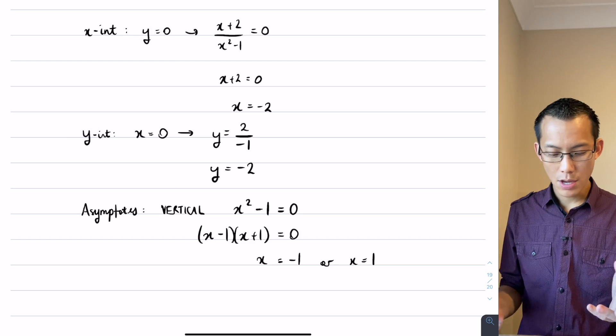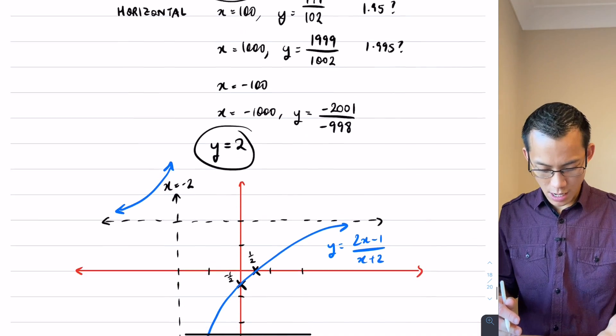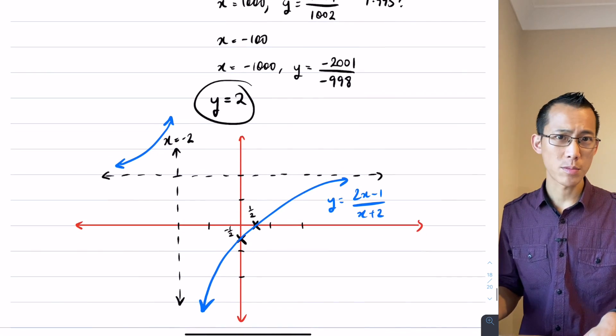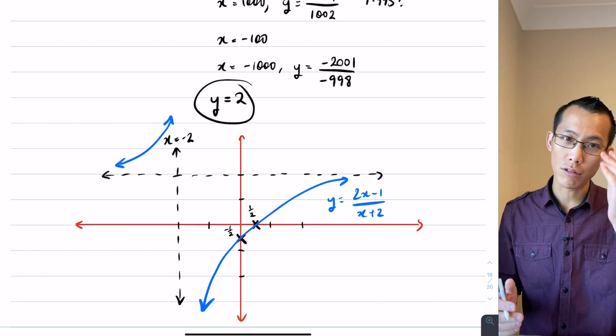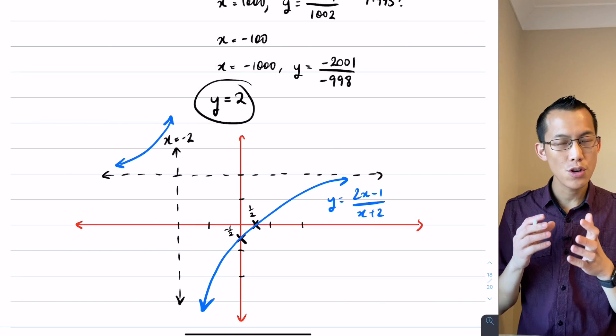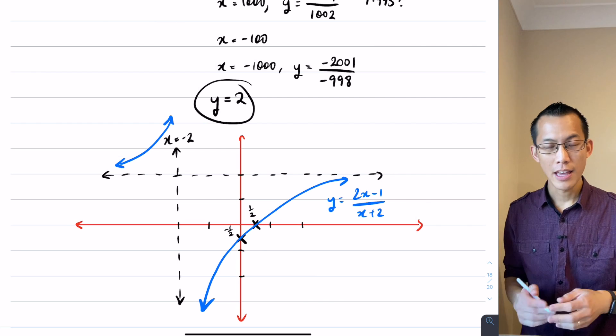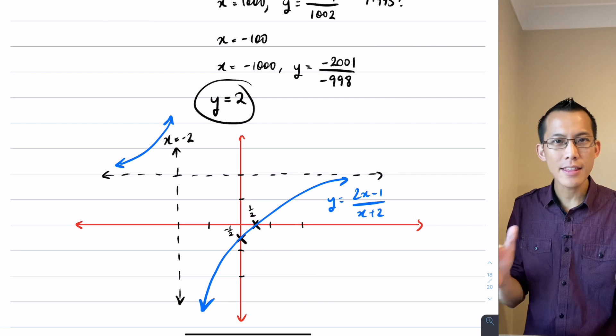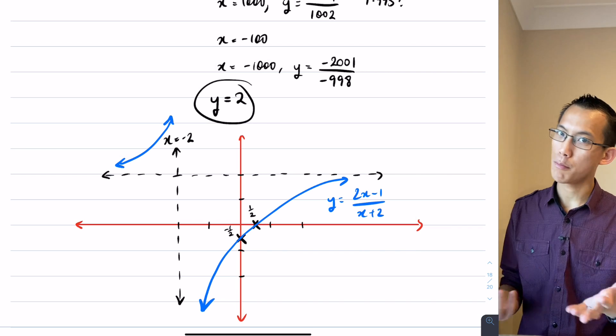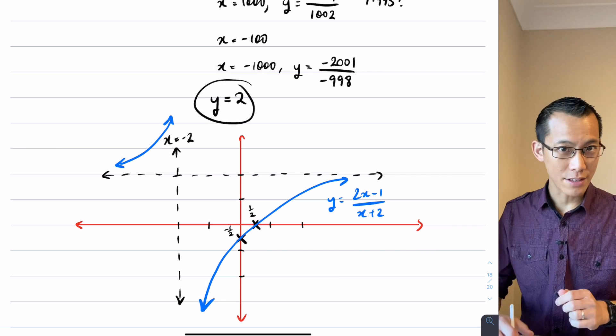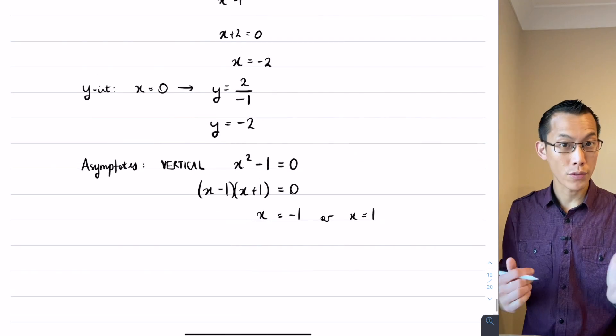Now in the case of 1 over x or this previous example, 2x minus 1 on x plus 2, we noticed there was just one vertical asymptote. But if you make your denominator more complicated, if it's a cubic or a quartic or anything like that, you can introduce as many vertical asymptotes as you like. So this time we've gotten 2.